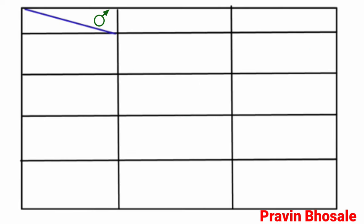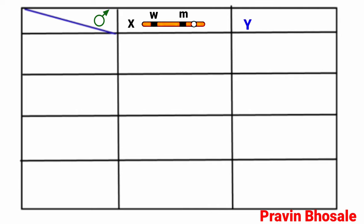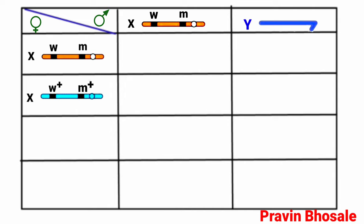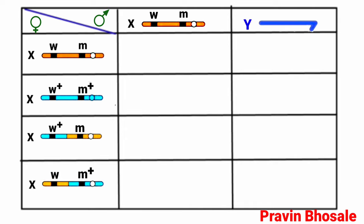Let's see the crossing. The male has X chromosome with small w and small m, and Y chromosome with no genes. The female produces four eggs: the first X chromosome has small w and small m; the second X chromosome has w plus and m plus — these first two are parental. The third and fourth result from crossing over: one X chromosome has w plus and m, and another has w and m plus.